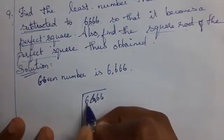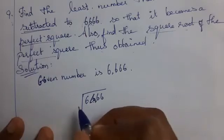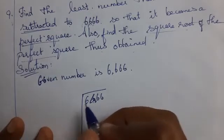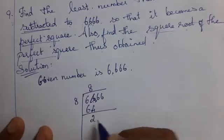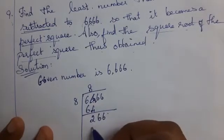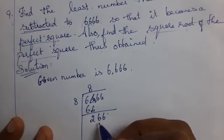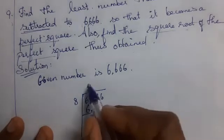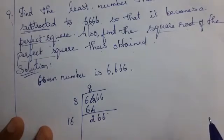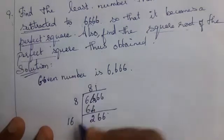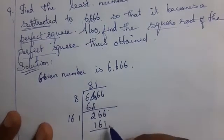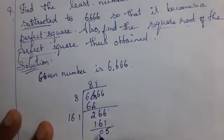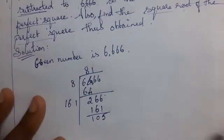Group the digits: 1-2, 1-2. We have 66. 6 squared is 36, 7 squared is 49, 8 squared is 64. Bring down 266. 8 twos are 16. Remainder: 6 minus 1 is 5, then 0, 1. So we get 161.